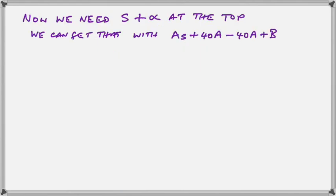Now we need to get the numerator into an S plus alpha and possibly an omega as well. If we add 40A and subtract 40A, when we look at our As plus B, we see that we've not changed it in any way because we've added 40A and we've subtracted 40A. The reason will become clear in a minute, because the minus 40 is actually the alpha that we worked out before.